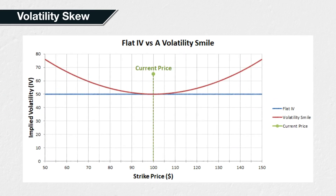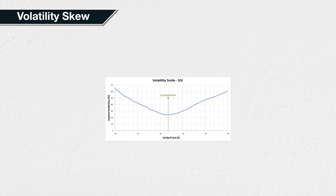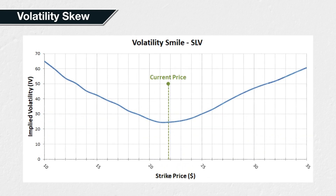In the previous lecture, we discovered that the implied volatility levels are rarely the same for every strike price in a given expiration. When plotted on a chart, instead of a flat line, the volatilities create a curve, which is often in the shape of a smile. We then saw a similar smile shape illustrated in a real-world example when we looked at the implied volatility of some options for SLV. The lowest implied volatility was with at-the-money strikes around the current price, and IV then increased in both directions in a relatively symmetrical fashion, drawing a smile shape with the volatilities.